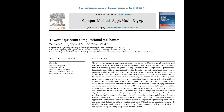They took it a step further and actually applied their algorithm to a real homogenization problem. They simulated a composite rod — imagine a rod made up of different segments, where each segment has a different stiffness, like a chain where some links are stronger than others. The algorithm nailed it. It accurately predicted the overall stiffness of the entire rod, even with all those different segments, proving that this quantum approach could handle the complexity of a real-world material.